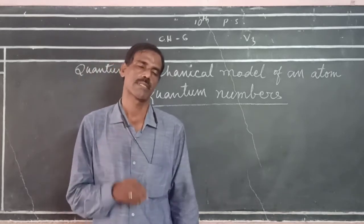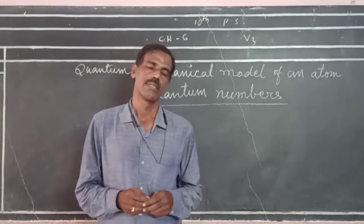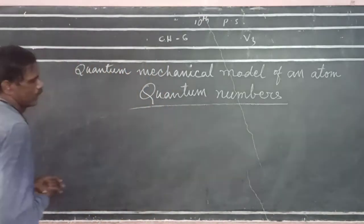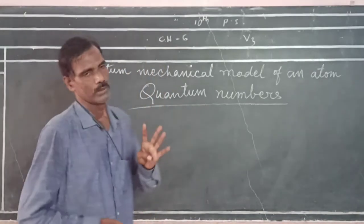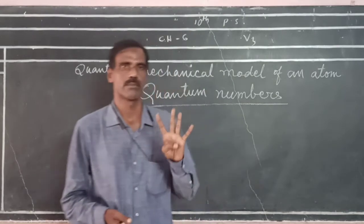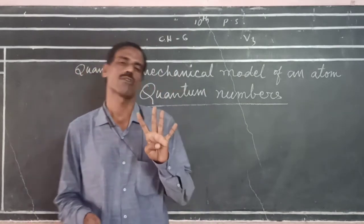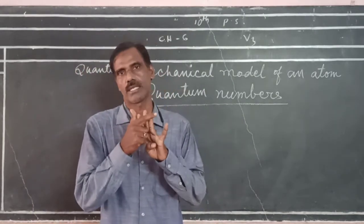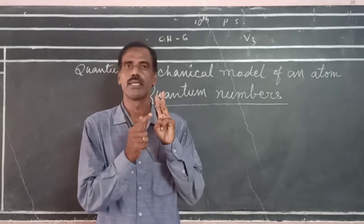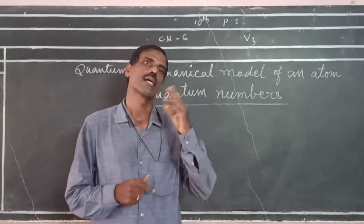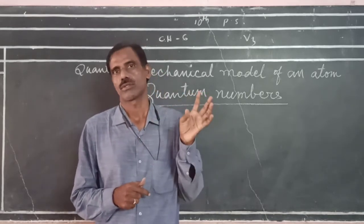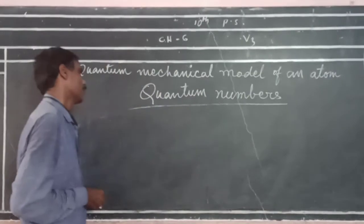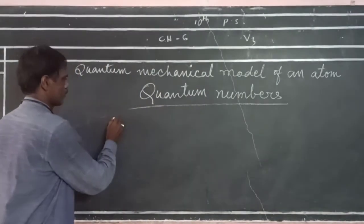First of all, we discuss principal quantum numbers. There are four types of quantum numbers, out of which three are related to the atom and the fourth one is related to the spin of the electron. The first one is the principal quantum number.